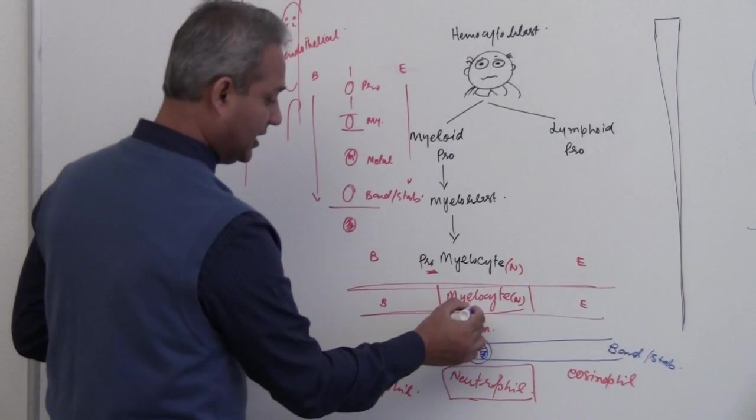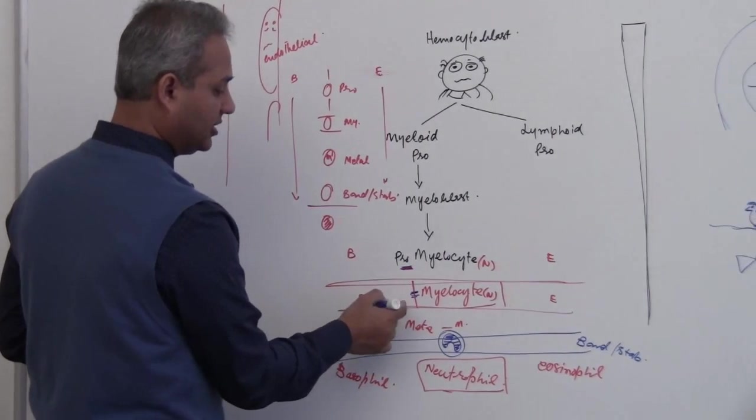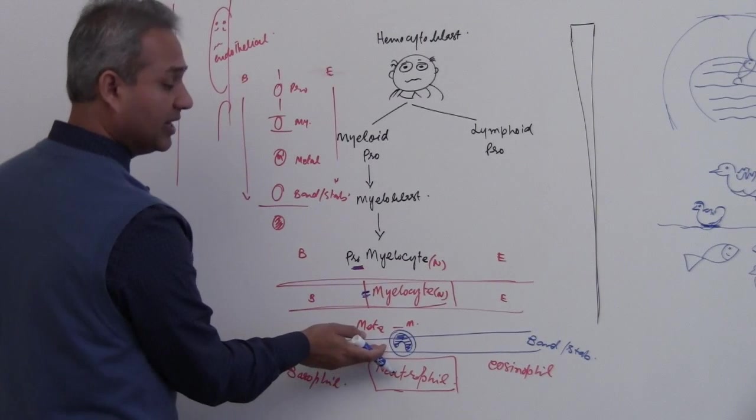So band or stab, myelocyte keep that in mind. Before myelocyte is promyelocyte, after myelocyte is metamyelocyte, then appears band.